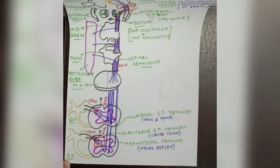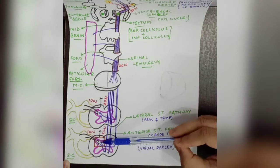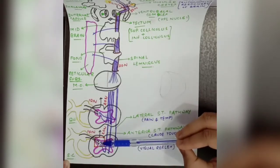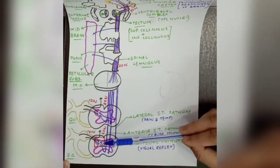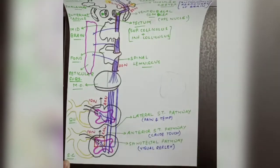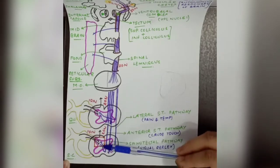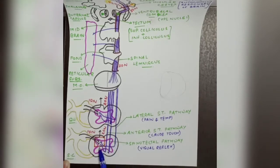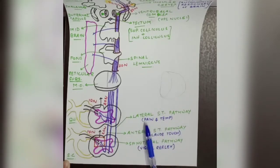The second order neuron begins and is called the anterolateral spinothalamic neuron. These anterolateral spinothalamic fibers cross the entire gray matter contralaterally. There are two main divisions: the lateral spinothalamic pathway, which carries pain and temperature sensations, and the anterior spinothalamic pathway, which carries crude touch.